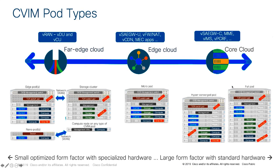With CVIM, you have quite a lot of flexibility in choosing deployment models and form factors. Going from right to left: on the right is the traditional full pod, with a dedicated set of servers for controllers, three or more dedicated servers for storage, the rest for compute, and a management server which can now be virtualized. This is typically found in core data centers where you have many workloads and the physical space to run all these servers.